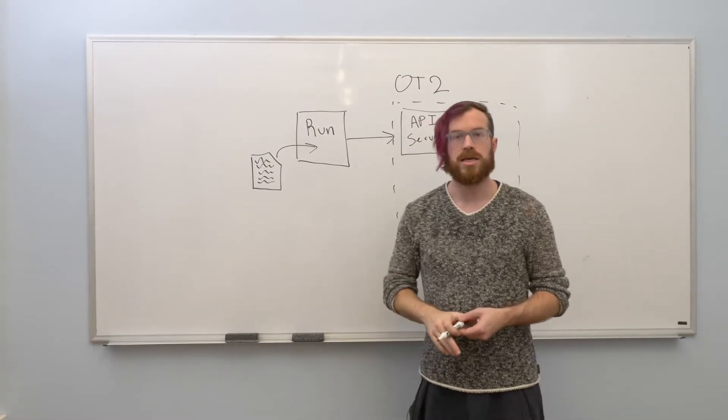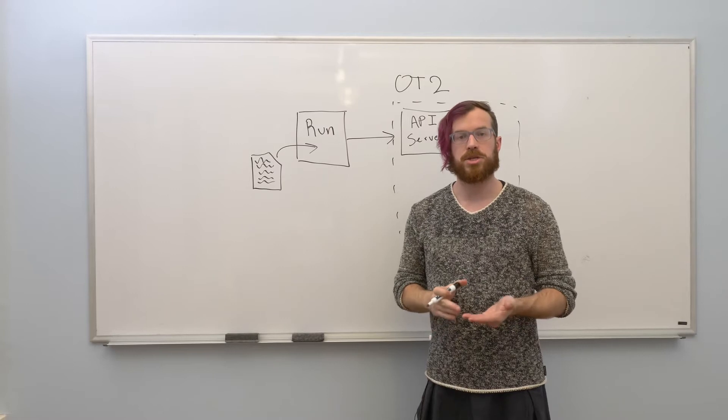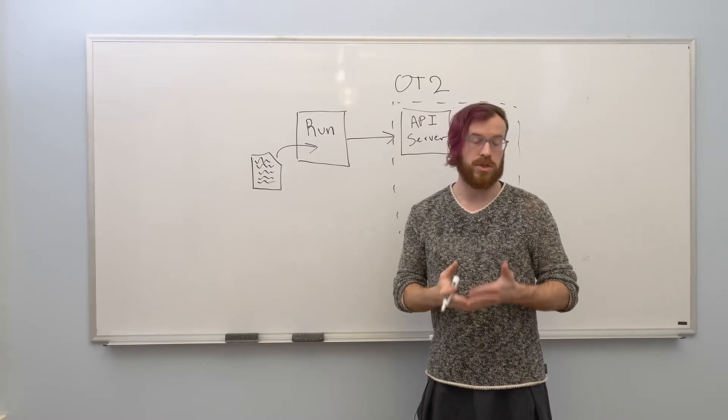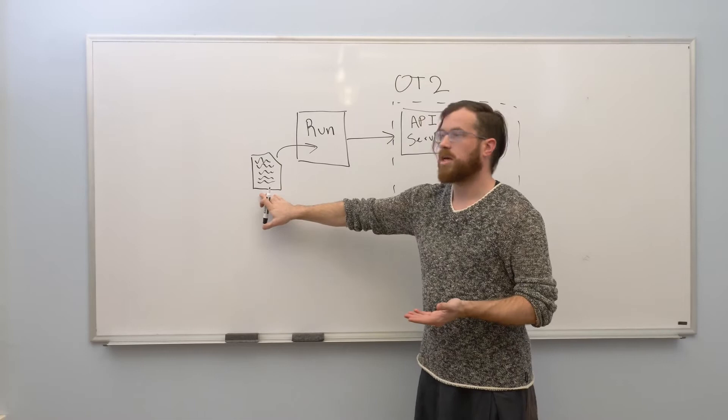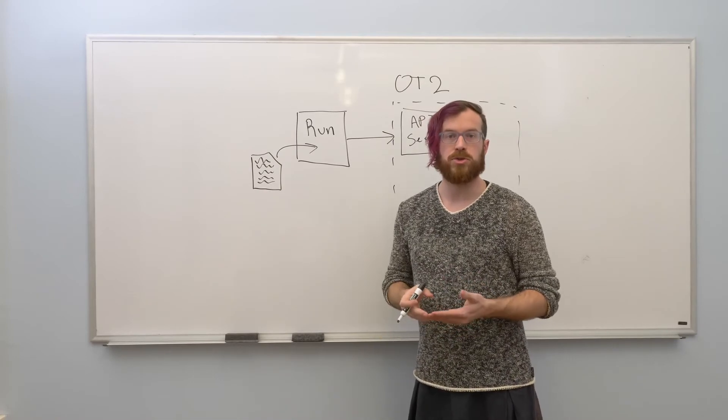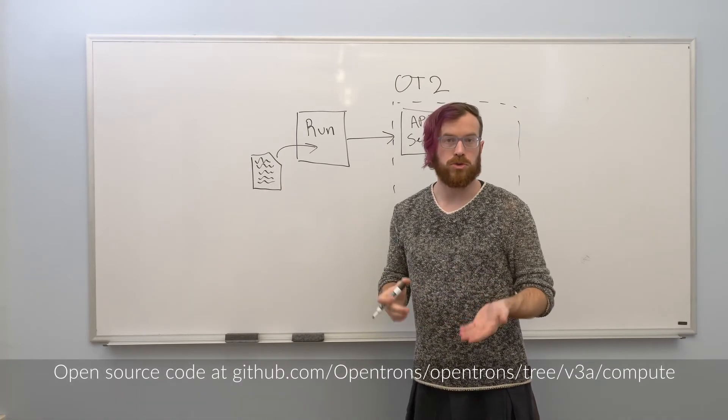The API server is an application that is running on the robot and it translates a protocol file into machine-readable control instructions.